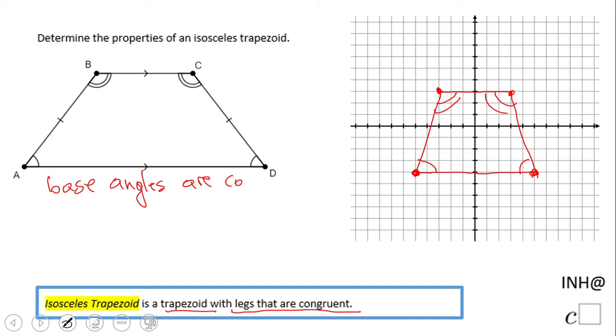Not all of them, right? We have two pairs: angle A is congruent to angle D, and angle B is congruent to angle C. But there is one more property.